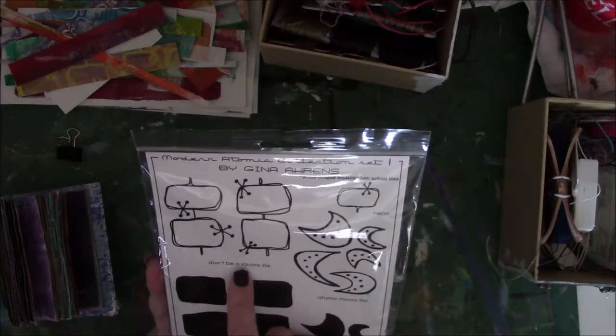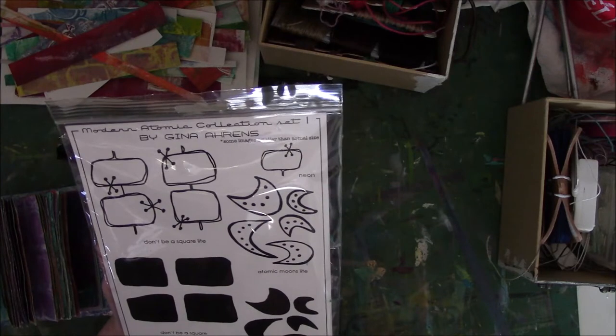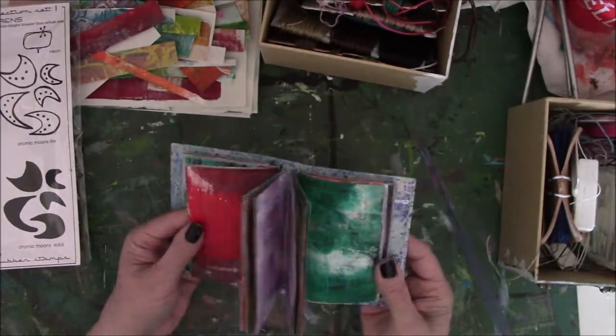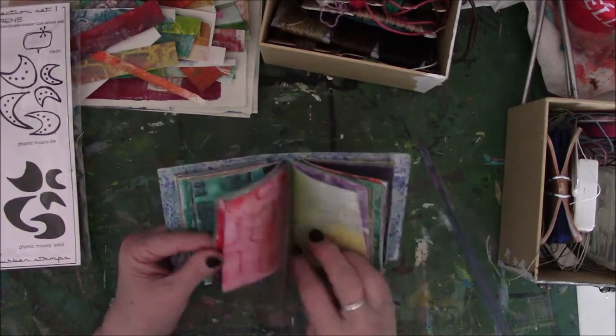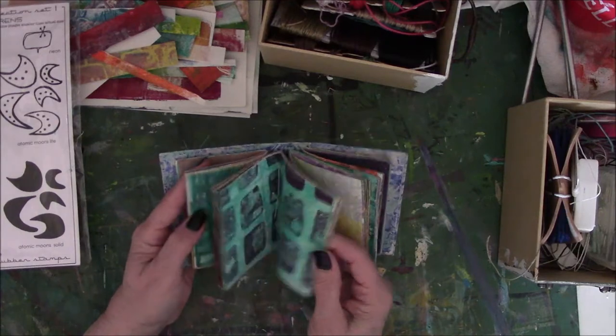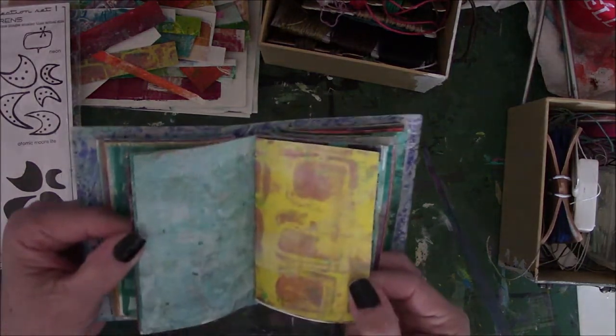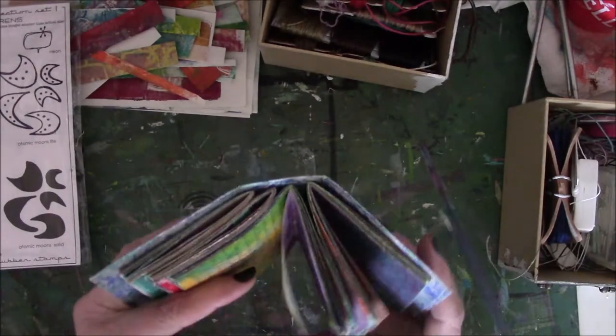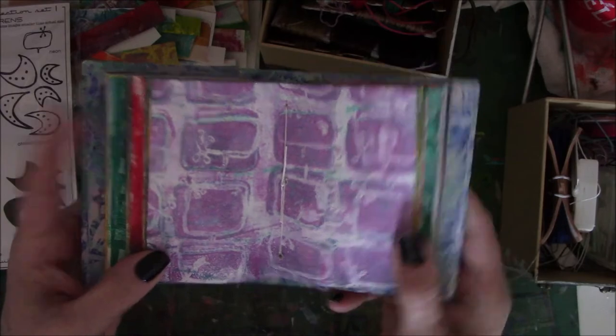This one says Don't Be A Square Lite, and this one says Don't Be A Square, and then these are called Atomic Moon Solid, Atomic Moons Lite. So there it is, all done, my little bitty painted paper journal. I called it a junk journal in the beginning but I don't really think it's a junk journal. It's mostly a painty paper journal. So you got paints on both sides of the paper and turned out really well. I sometimes shock myself, and that's a good thing because it's always nice to be surprised when something turns out better than you think it will.